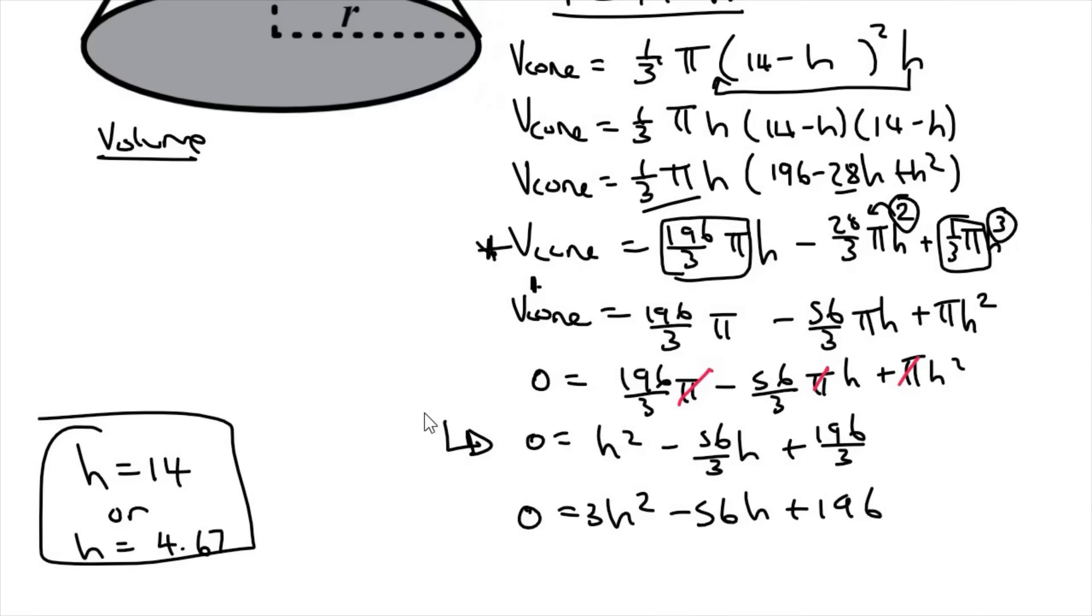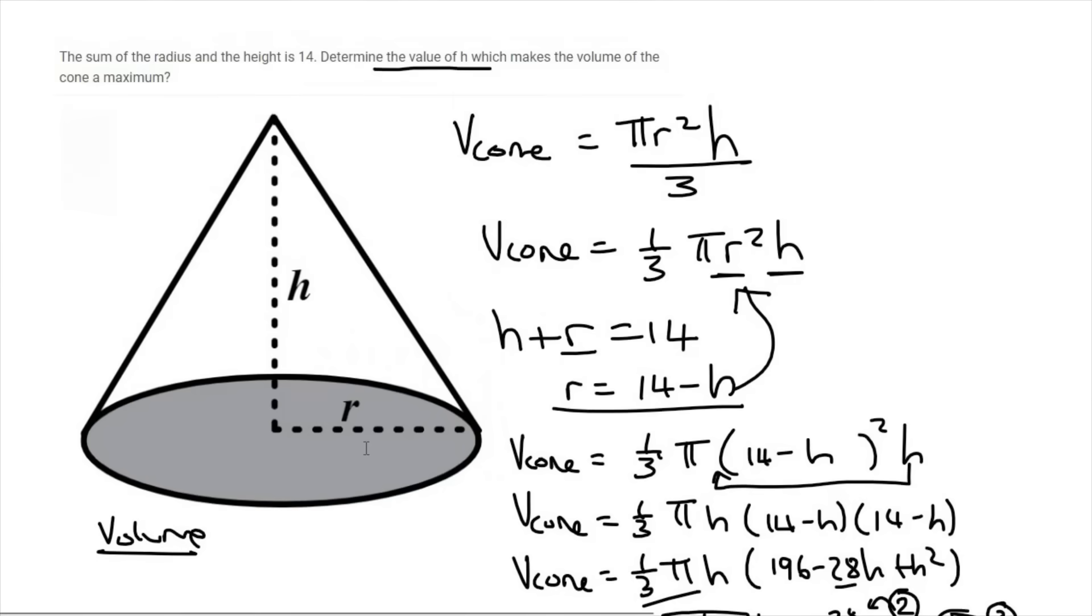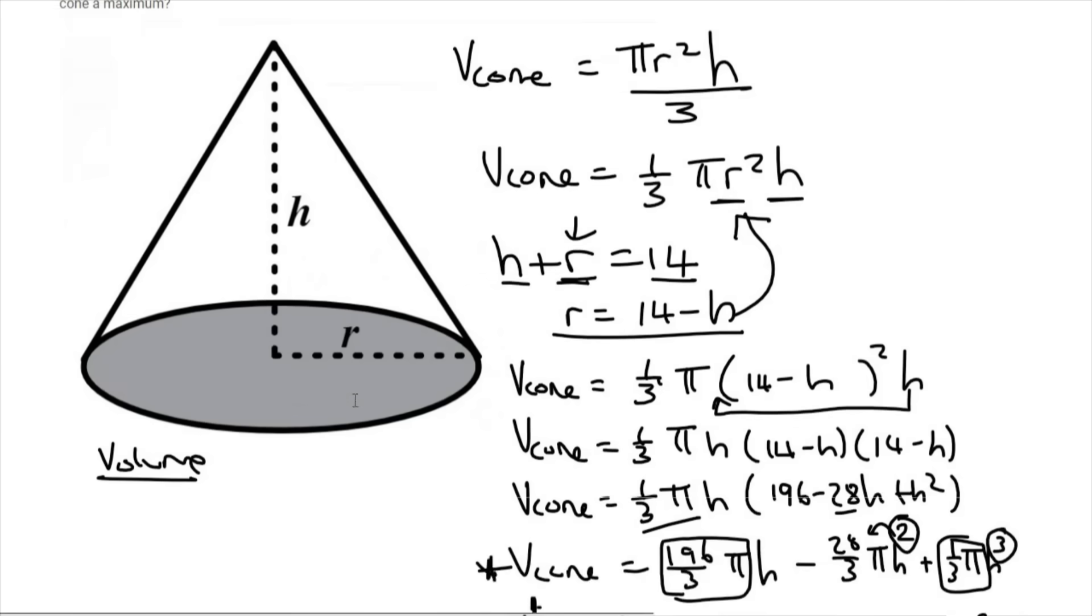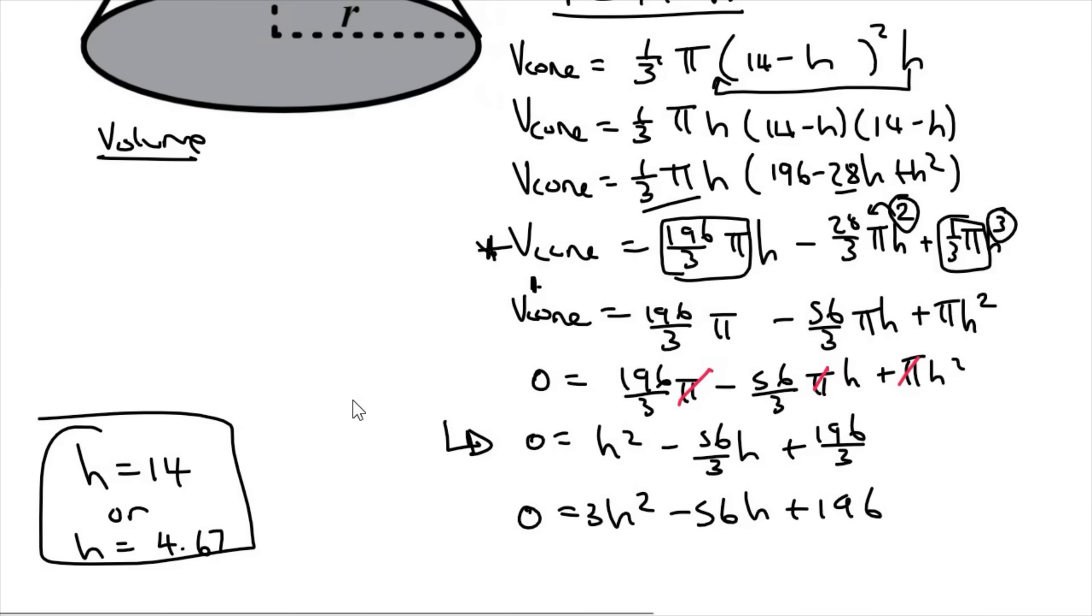Now it might be difficult to know which one's correct, but h cannot be 14. Why do I say that? The reason I say that is that in the beginning here, we said that the height plus the radius must be 14. So if the height is already 14, then the radius would be zero. And so think of a cone with a zero radius. Well, that's just going to be a straight line. So that doesn't really make sense. That would have zero volume. So that's probably the minimum. But what we want is the maximum. And so h is going to be 4.67.